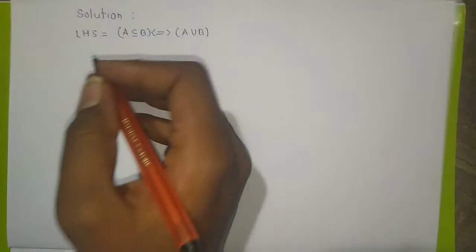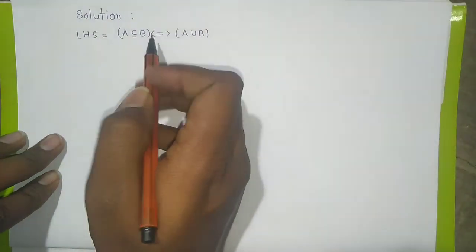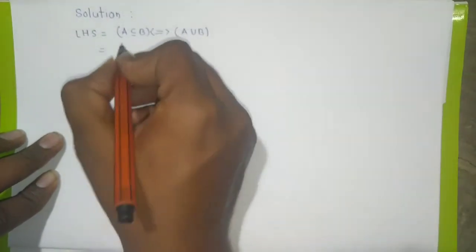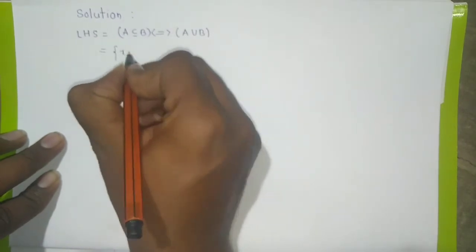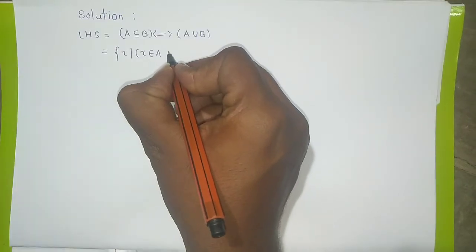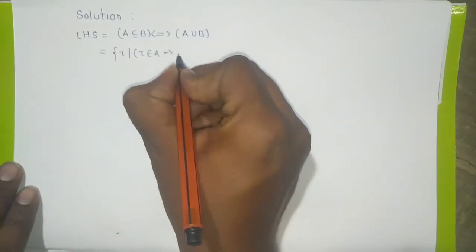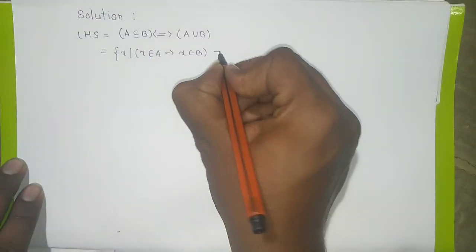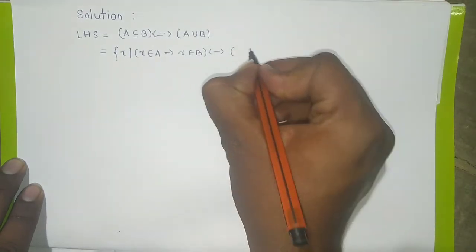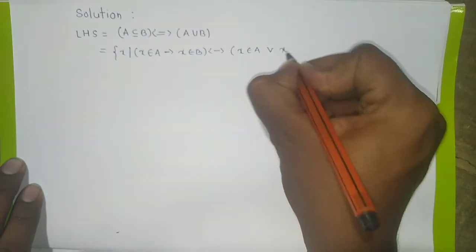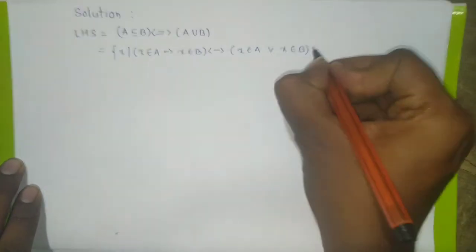To prove this we consider the LHS of the equation. We represent it in set notation as: x such that x belongs to A implies x belongs to B, double implies x belongs to A or x belongs to B.